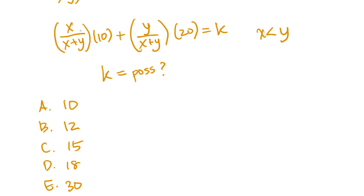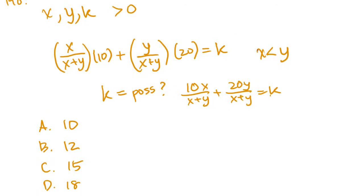The first thing you want to do is obviously multiply, so you get 10x over x plus y plus 20y over x plus y equals k. But then it's like, how do I even know which one is k? Do I just plug things in? I don't know what x and y is. It's a really weird question.